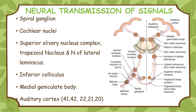Neural transmission of signals from the transduction of sound waves in the hair cells are transmitted through a complex auditory pathway. The auditory nerve reaches the spiral ganglia (first order neuron), then to the cochlear nuclei — ventral and dorsal — then to the superior olivary nuclei, trapezoid body nuclei, then lateral lemniscus, then inferior colliculus, then medial geniculate body. Finally, through the auditory radiations it reaches the auditory cortex. Brodmann's areas 41, 42, 22, 21, and 20.